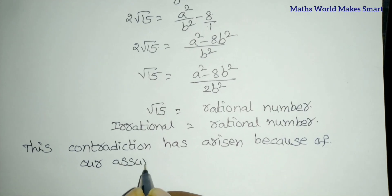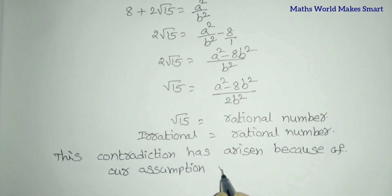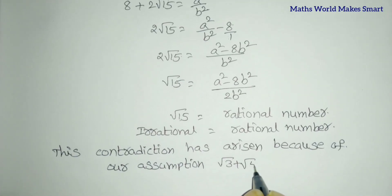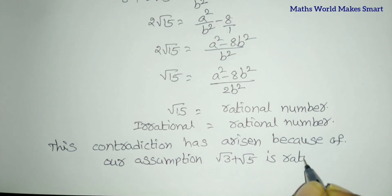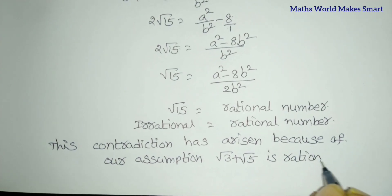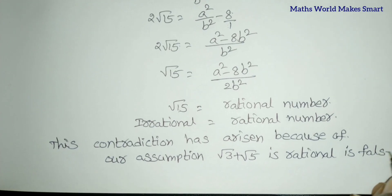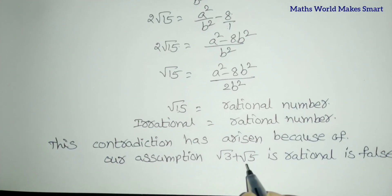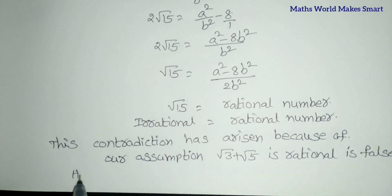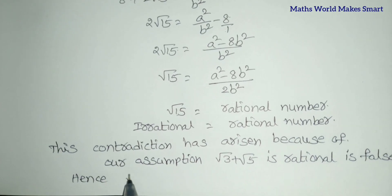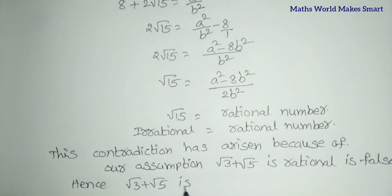This contradiction has arisen because our assumption is wrong. Our assumption that root 3 plus root 5 is rational is false. Hence, root 3 plus root 5 is irrational.